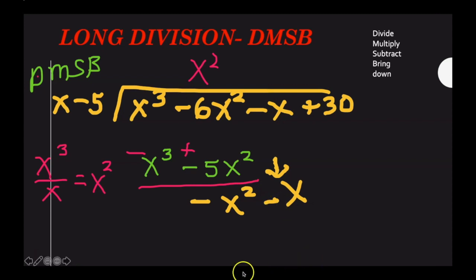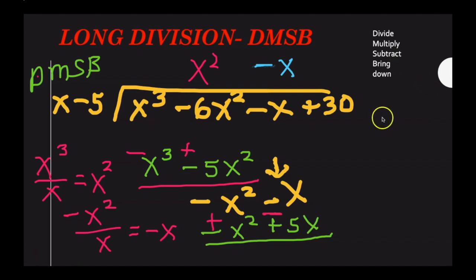Now I take the lead term, negative x squared, and I divide it by the lead term divisor x, which gives me negative x. And of course, that goes right up in the quotient. And again, I'm going to take the negative x times the x minus 5, and I get negative x squared plus 5x. What's next? Well, I multiplied. I divided here, I multiplied to get this, now I subtract. So I change both signs. Now notice the first column always drops out. If it doesn't drop out, you did something wrong. It has to drop out. When we bring down, we get negative 6x plus 30.